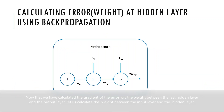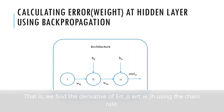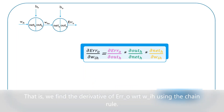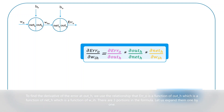Now that we have calculated the gradient of the error with respect to the weight between the last hidden node and the output layer, let us calculate the weight between the input layer and the hidden layer. That is, we find the derivative of error O with respect to WIH using the chain rule. To find the derivative of the error at outH, we use the relationship that error O is a function of outH, which is a function of netH, which is a function of WIH.